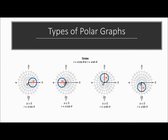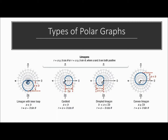We're going to go ahead and name the types of different polar graphs. First off, we have circles, which have the general form R = a·cos(θ) or R = a·sin(θ) — they look like circles because they are circles. Next, we have limaçons: you can have the big inner-loop one, the cardioid, a dimpled limaçon which just has a little dimple, and then a convex one that looks kind of like a circle. These have general form equations with A and B: A less than B, A equals B, A between B and 2B, and A greater than or equal to 2B.